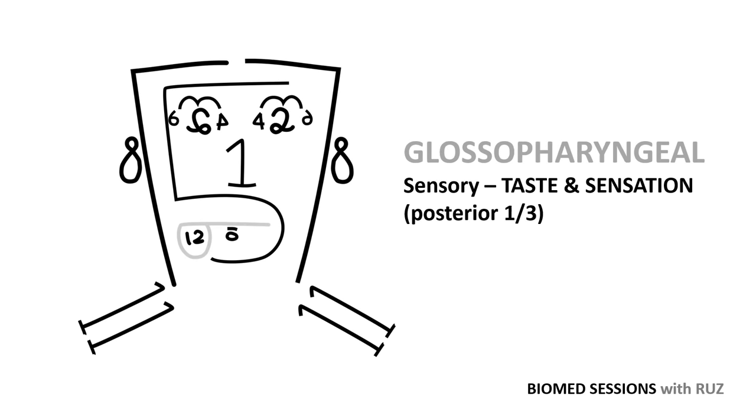The glossopharyngeal nerve, cranial nerve 9, also has an interesting name. Glossa means tongue, and pharynx is the back part of the throat. Hence, it's no surprise that it carries sensory fibers for taste and sensation from the posterior third, i.e., the back part of the tongue, and has motor fibers that aid in swallowing. It is also involved in saliva secretion.